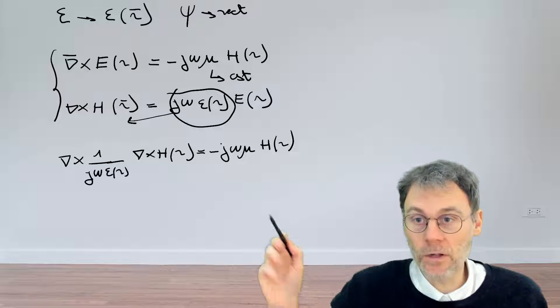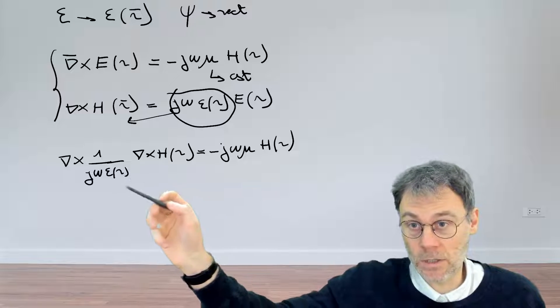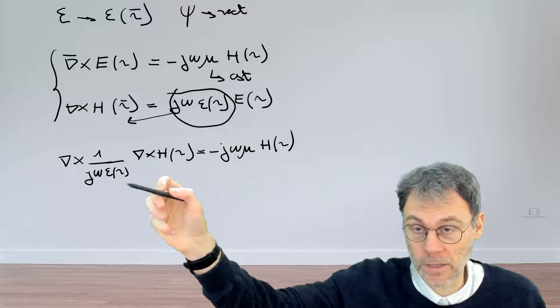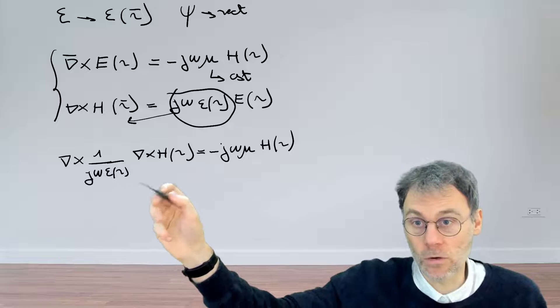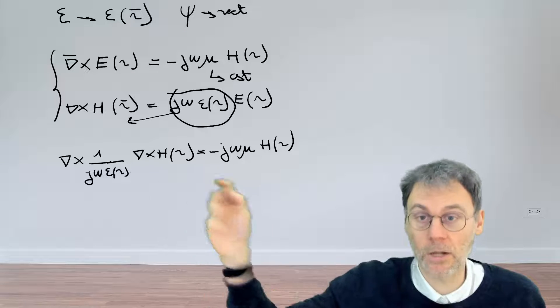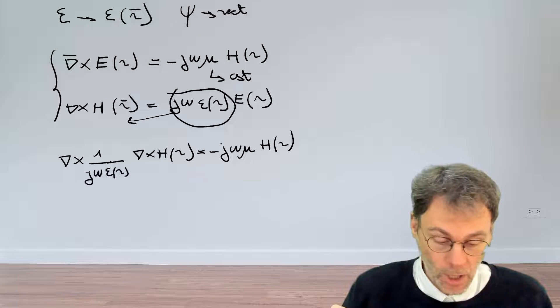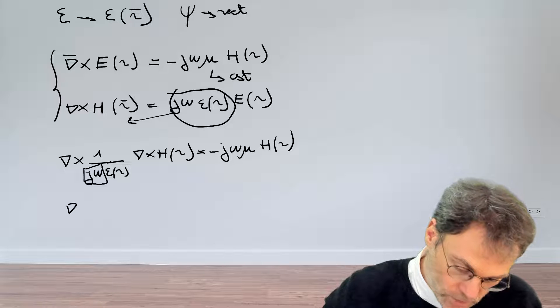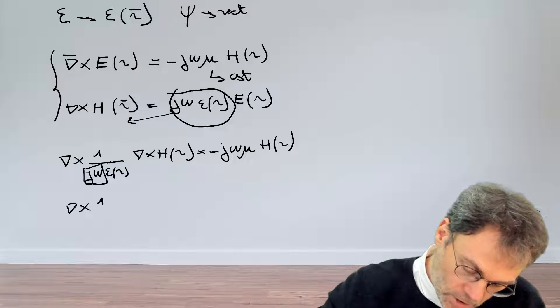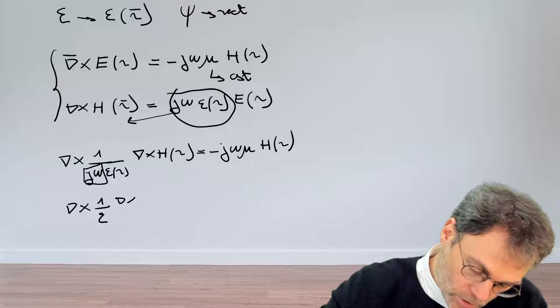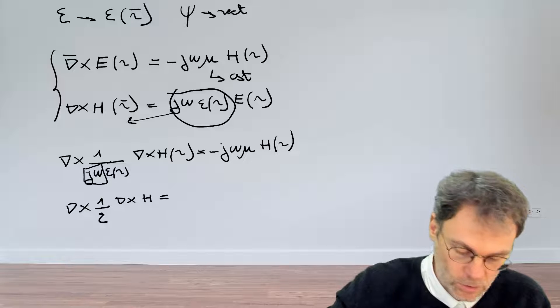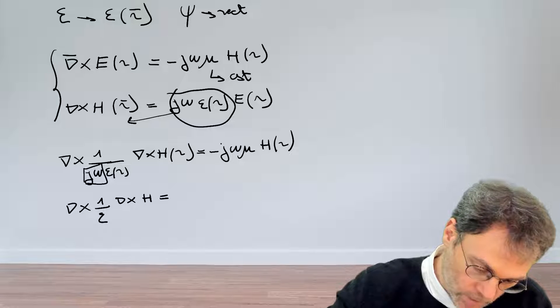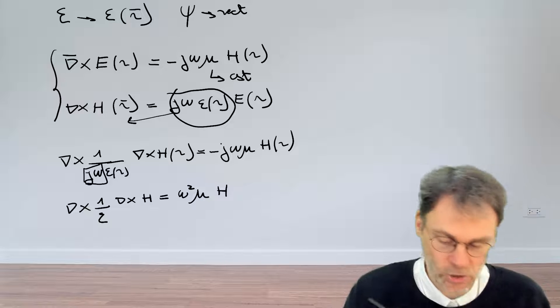Now, we need to be very careful here. We should not bring this epsilon here outside of this curl operator simply because epsilon here is no longer a constant. It can vary as a function of the position. So the partial derivatives here will play a role. So this epsilon cannot move outside of the differential operator. What we can move is the j omega because that's just a boring constant. So we can bring that to the right hand side, giving us then that the curl 1 over epsilon curl of H is equal to - so j times j is minus 1, another minus 1 there - you have omega squared mu H.